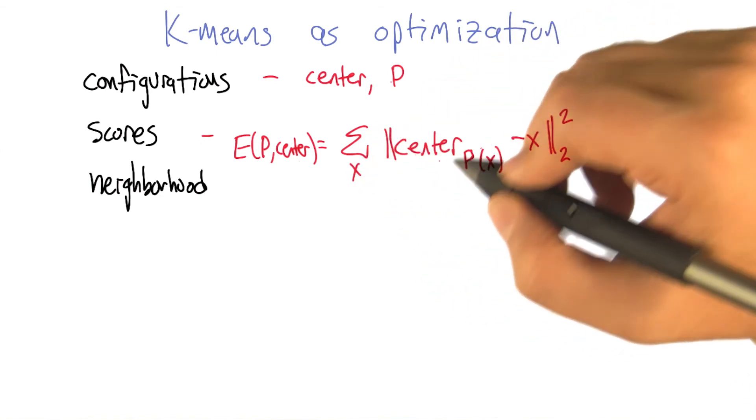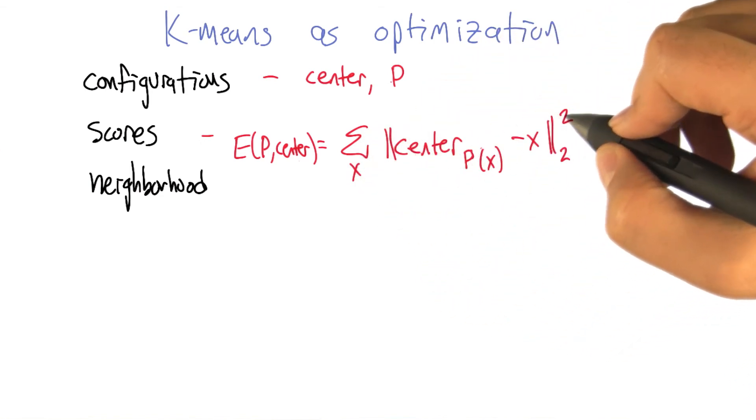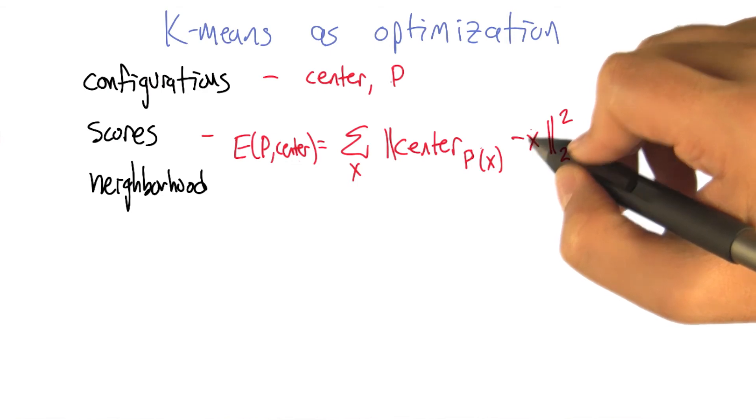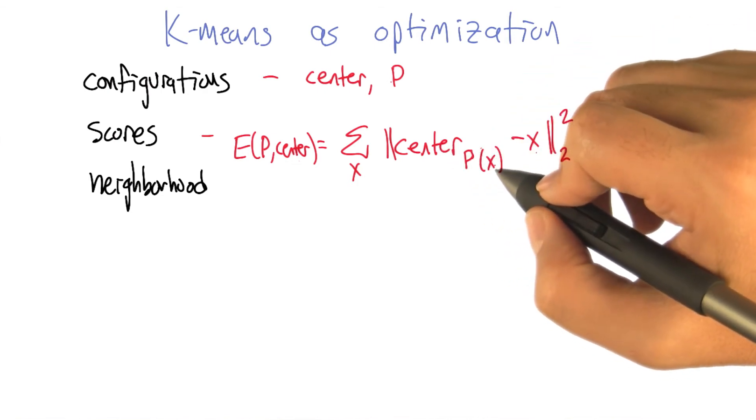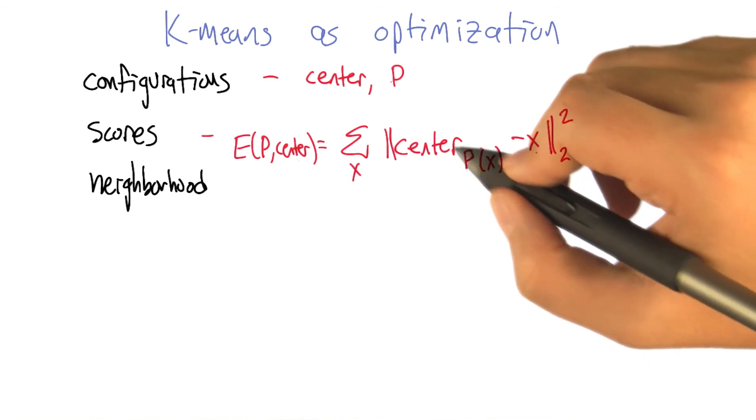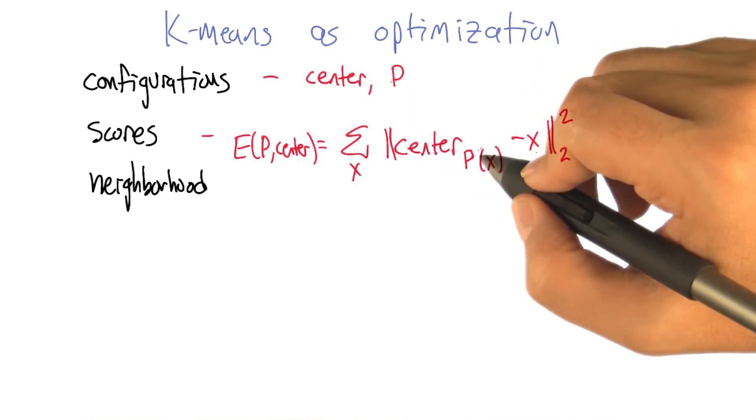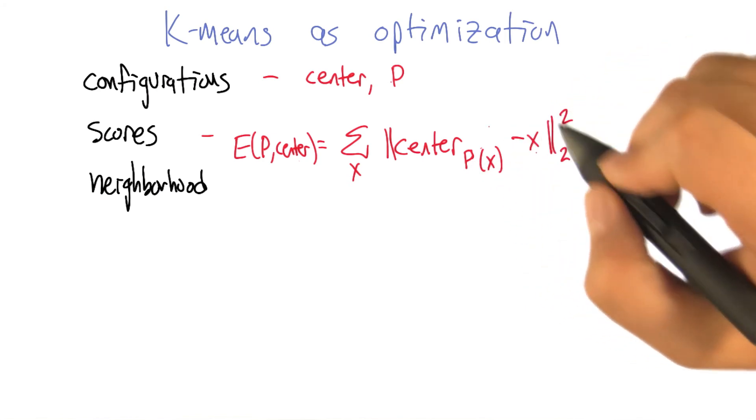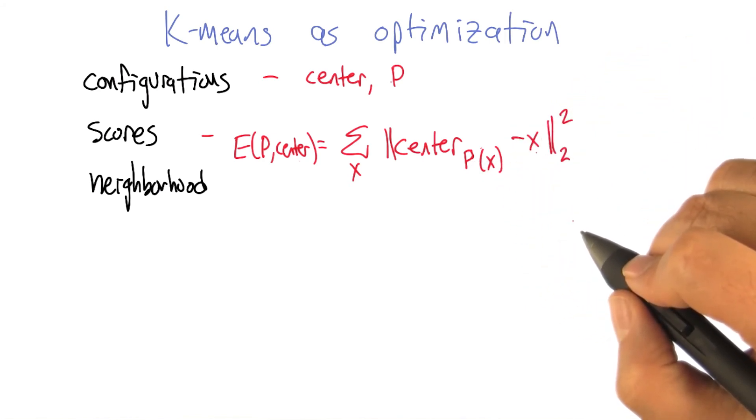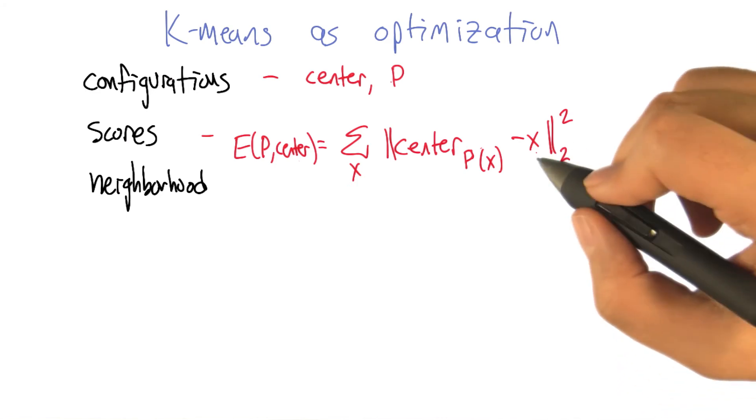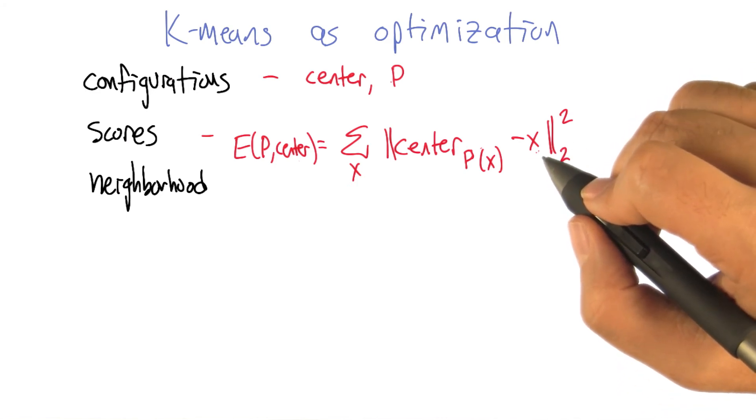what we're going to do is we're going to sum over all the objects, the distance, the square distance actually, between the object and its center, right? So P of X is the cluster for X and center sub that is the center for that cluster. So that drives home the idea that we're talking about Euclidean distance here because X would have to be in the same space as the centers are by definition.